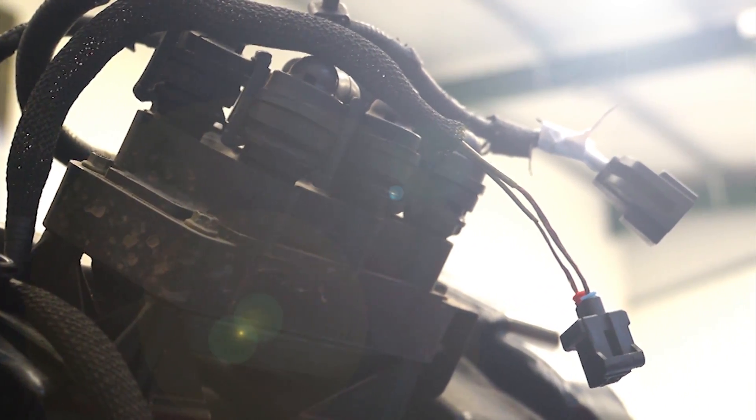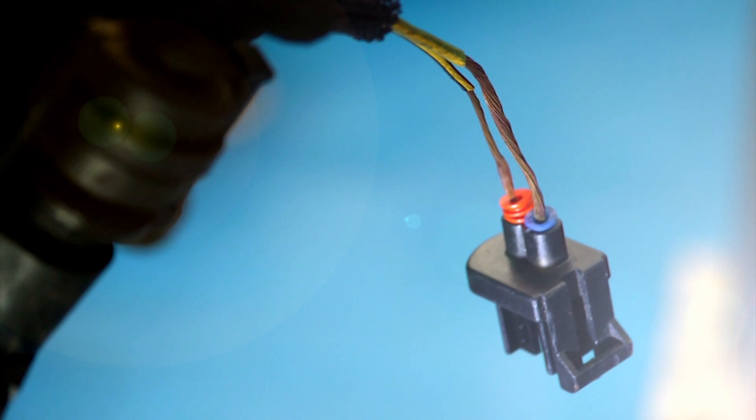Heat shrink tubing is the ideal way to repair and refurbish worn and cracked insulation of vehicle wiring and is very easy to use.